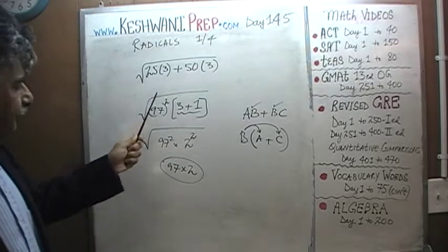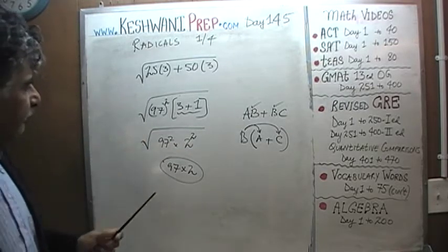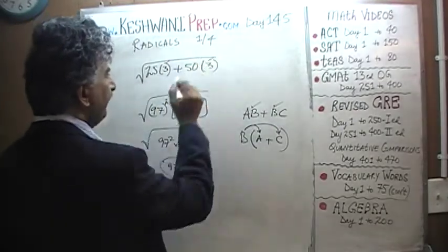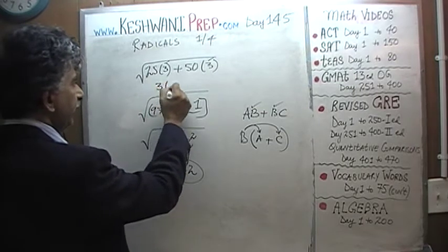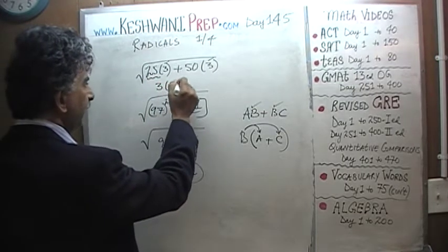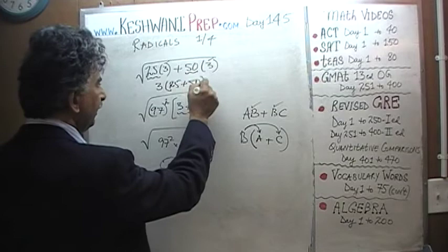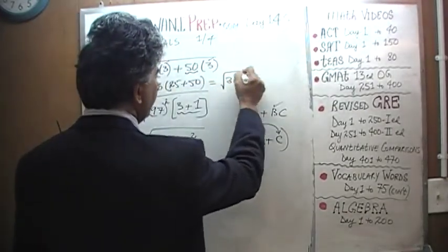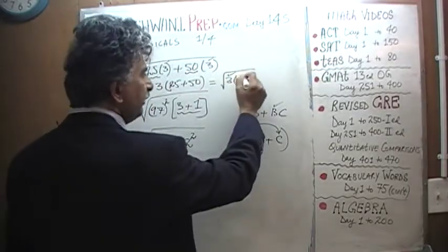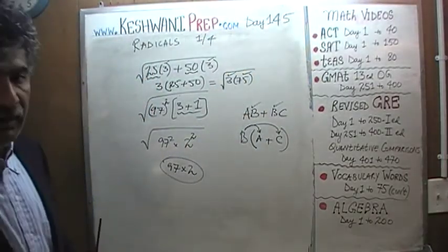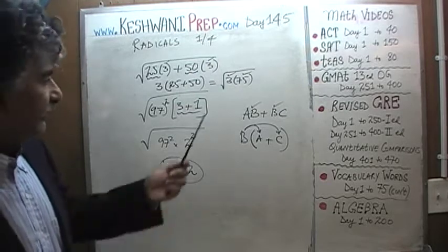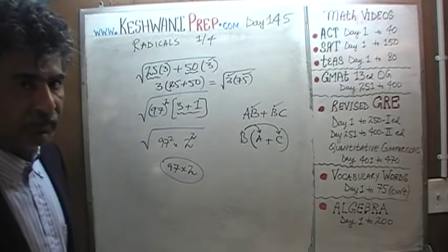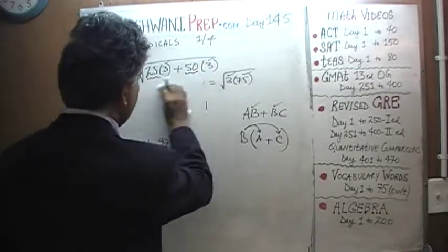What we need to understand here is that if we take 3 as a common factor, taking it out leaves us with 25 and 50, giving us 3 times 75. But we cannot take the square root of 3 or 75 because they are not perfect squares — that's not going to get us anywhere. So we have to find a factoring where we end up with a perfect square.